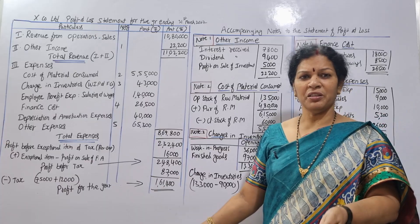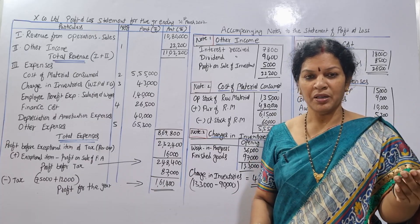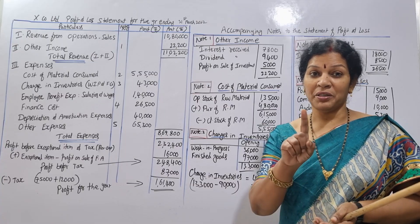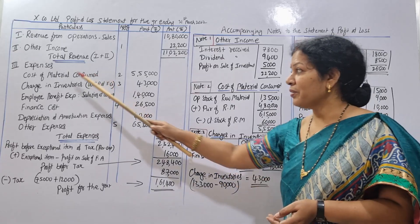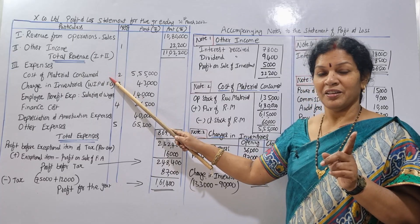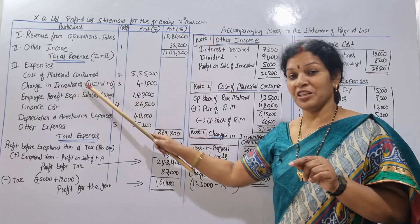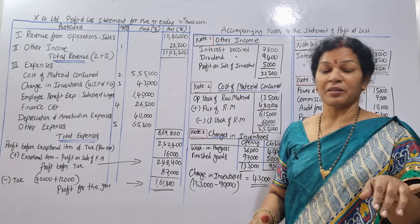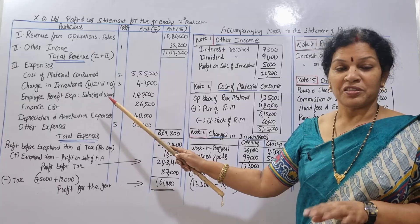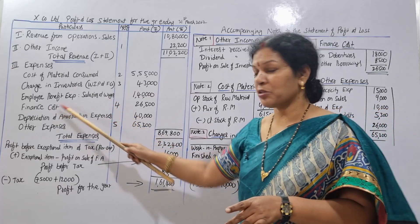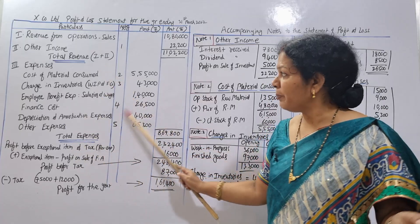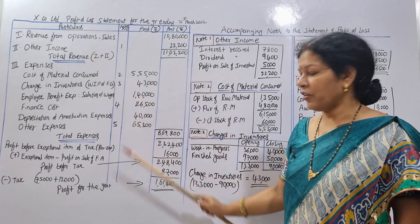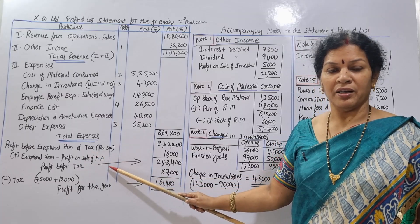It is easy to make this format. Every item is available in the problem. The raw material, work in progress, and finished goods are given. First, cost of material consumed; then change in inventory for work in progress and finished goods; then depreciation, employee benefit expenses, and finance cost. If you use these notes, the format is complete.